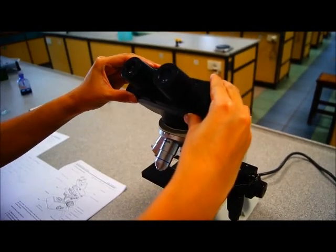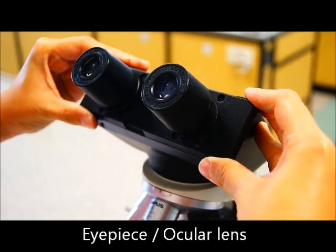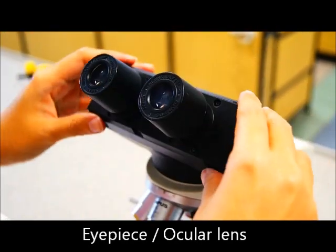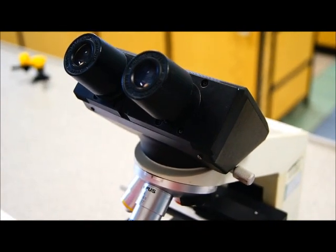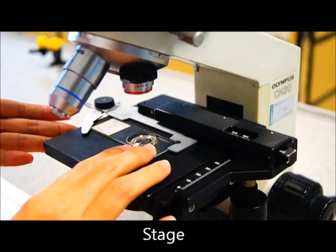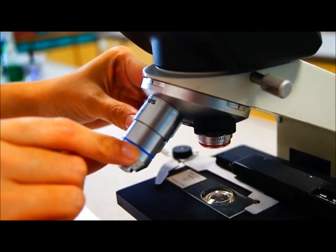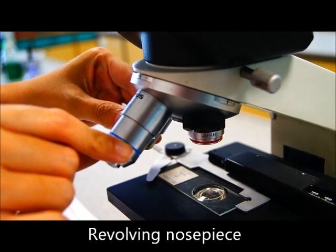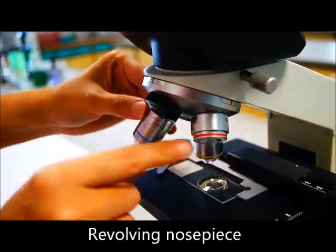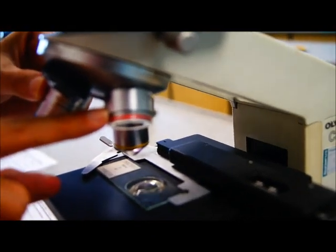This is the eyepiece or ocular lens. You can actually adjust it like this to fit your eye, the width of your eyes. Next, there's the stage here where we put the slide. This piece of equipment here is called the nose piece. It contains the different magnifying lenses. You can see that they are all labeled differently, telling you the magnification.